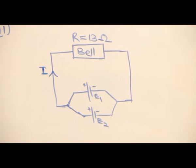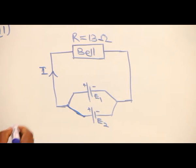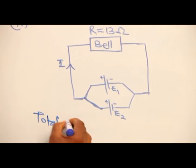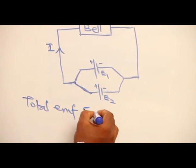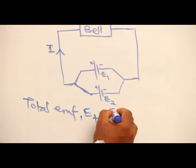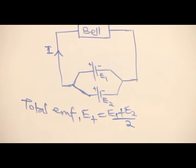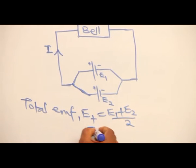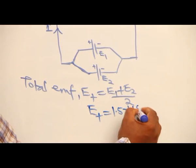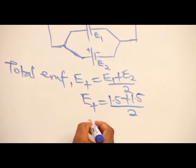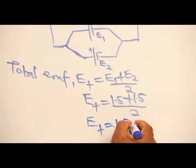Now that the cells are in parallel connection, the total EMF of the battery formed, E total will give me E1 plus E2, since they are 2 over 2, the average. So the total EMF will give me 1.5 plus 1.5 divided by 2. We are getting total EMF of 1.5 volts.